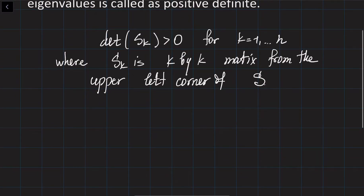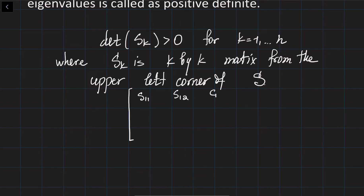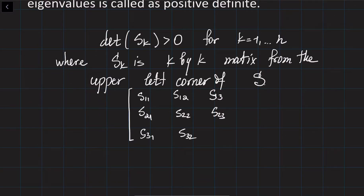For example, if the S matrix is given as a 3 by 3 matrix — S11, S12, S13, S21, S22, S23, S31, S32, S33 — then that is our symmetric matrix.